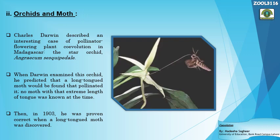Another example of mutualistic co-evolution is the co-evolution of orchids and moths, which have a beneficial relationship. Darwin predicted this evolutionary mechanism between orchids and moths approximately 40 years before it was proven. In the picture, we can see the moth and its proboscis, the orchid plant known as the star orchid or Darwin's orchid. Charles Darwin described this interesting case of pollinator-flowering plant co-evolution in Madagascar.